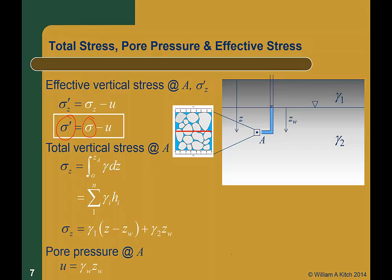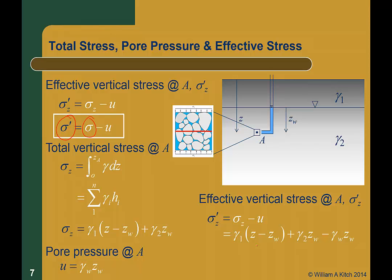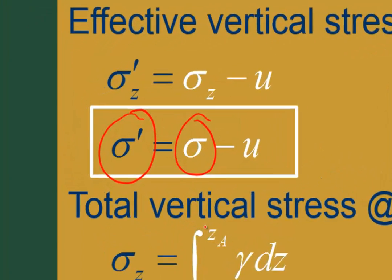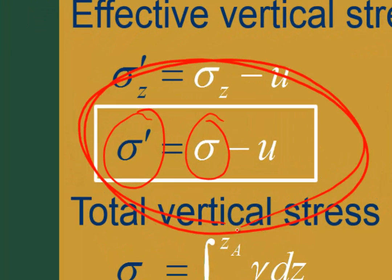The pore pressure at A will simply be gamma water times the height of the water in the piezometer, which is zw. And then we can compute the effective stress at A, sigma prime z, as sigma total minus u. For this example, that will be gamma 1 times the quantity (z minus zw) plus gamma 2 times zw, minus gamma water times zw. We can simplify the equation by combining the last two terms: sigma prime z equals gamma 1 times (z minus zw) plus the quantity (gamma 2 minus gamma w) times zw. This equation — effective stress equals total stress minus pore water pressure — is perhaps the single most important concept in all of geotechnical engineering, and one you should commit to memory.